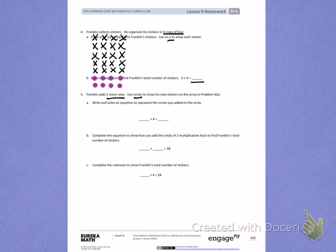Write and solve an equation to represent the circles you added. I only want to pay attention to the circles that I added. I added 2 rows of 4. 2 times 4 equals 8. I added 8 new circles.